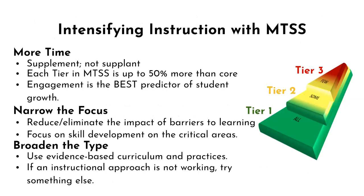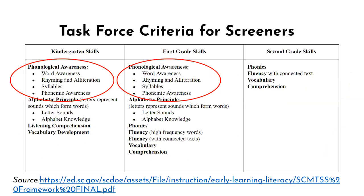Multi-tiered systems of support is a framework designed to intensify instruction for students. While all students deserve quality Tier 1 instruction, some students will need additional layers of support. Universal screeners and other diagnostic assessments will help educators narrow the focus by uncovering critical areas that need special attention. This PLO will offer evidence-based practices and approaches to meet the varying needs of students. Selected universal screeners contain core components located on page 23 of the South Carolina MTSS framework and guidance document.